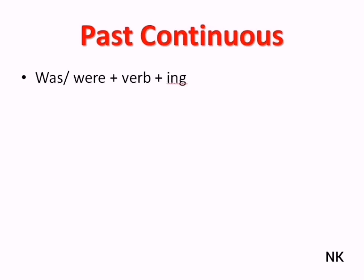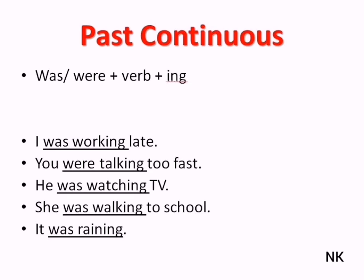How to form the past continuous? We use the past tense of the verb 'to be'—so either 'was' or 'were'—plus the base of the verb and '-ing'. I was walking late. You were talking too fast. He was watching TV. She was walking to school. It was raining.